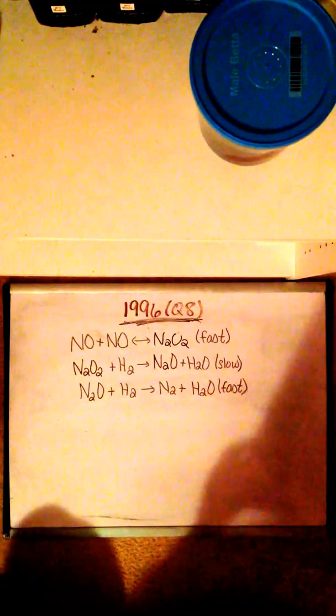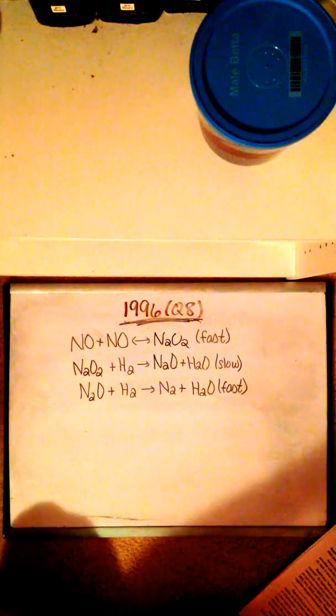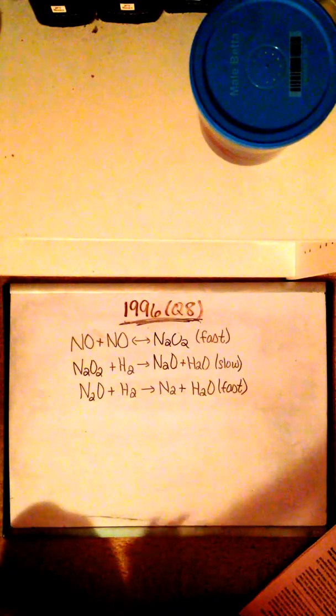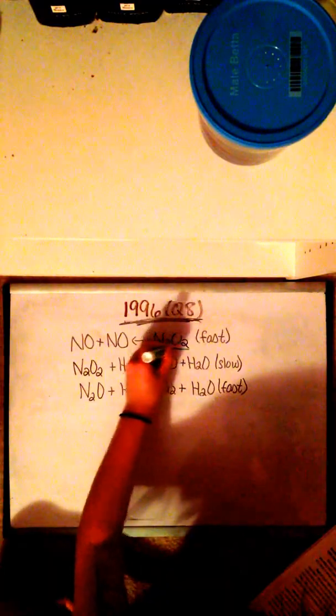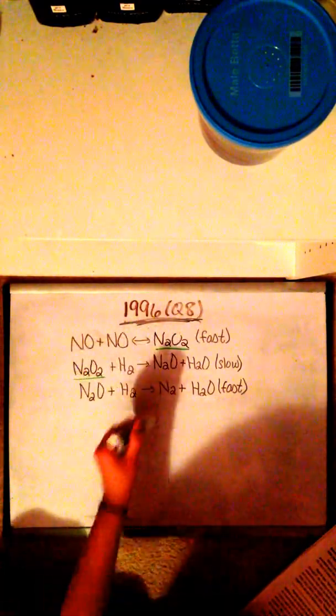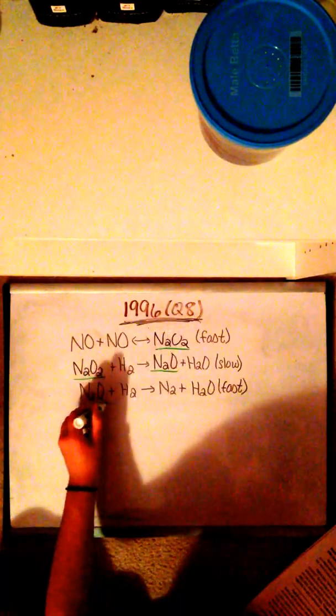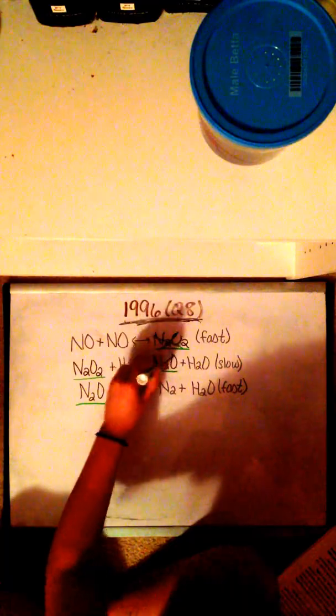Part A asks us to write a balanced equation for the overall reaction. By looking at these provided steps, we can cross off substances that are on both sides of the equations. So we have N2O2, which appears at the end and the beginning of an equation, and N2O that also appears at the end and the beginning of an equation. So with that said, we can cross off these two substances.